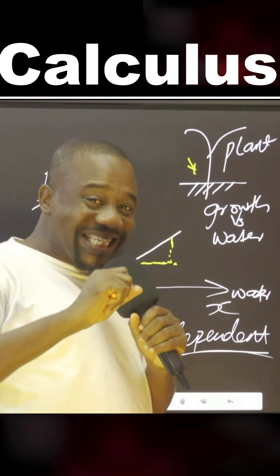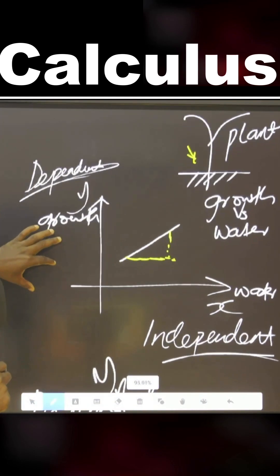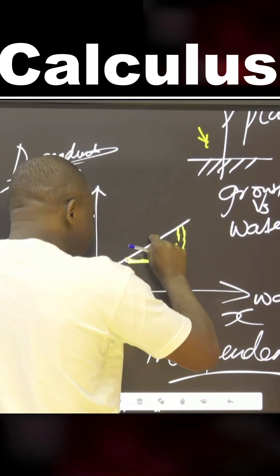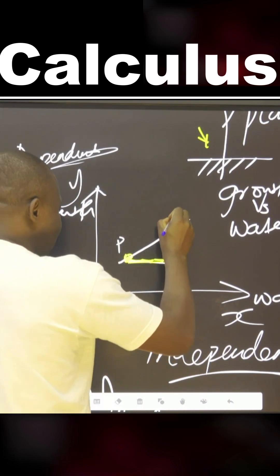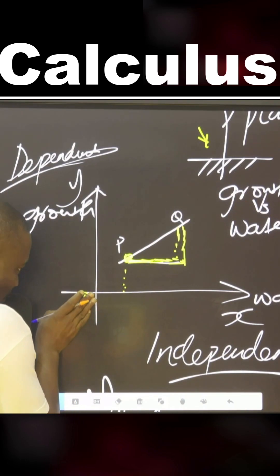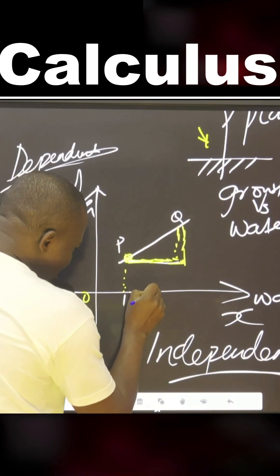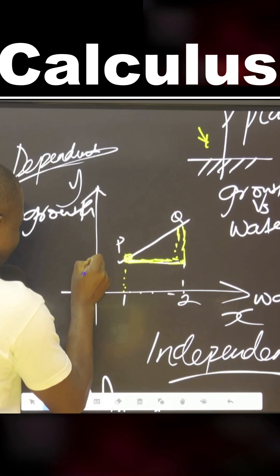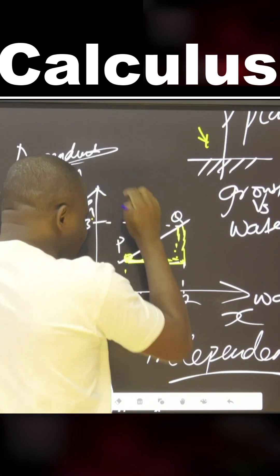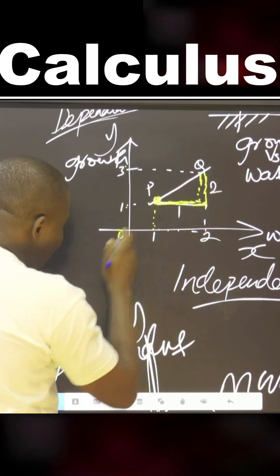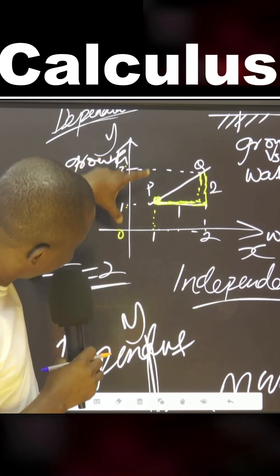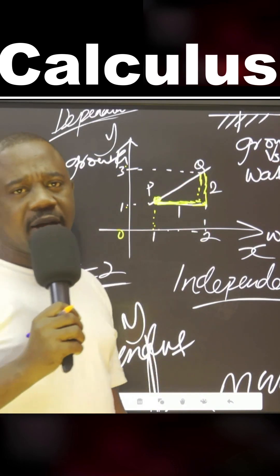If there is growth, we say it's positive. If there is no growth, close to zero, we say it's stagnant. If the growth decreased for some reason, we say it's negative. Now on the graph, this is the starting point P, and this is where we currently are. As x increases from zero to one, y increases from zero to three. The change in y is two and the change in x is one, so the rate of growth is two over one, which equals two. That's the rate of growth of the plant with respect to a drop of water.